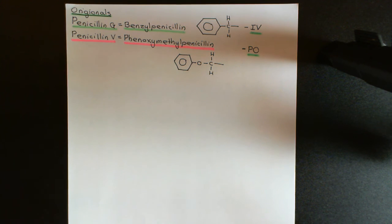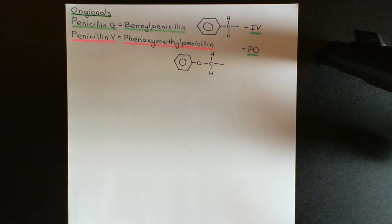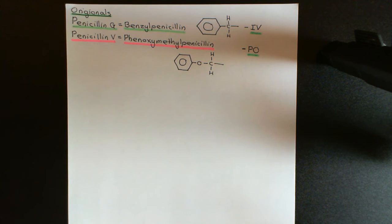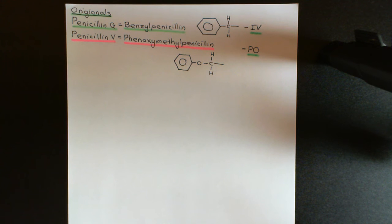Before discussing broad-spectrum and extended-spectrum penicillins, I want to address beta-lactamase resistance. When we started using the classical penicillins — Penicillin G and Penicillin V — it was a medical revolution; we could now cure bacterial infections that would previously have killed people. However, very quickly, bacterial populations began to evolve and show resistance to these molecules.